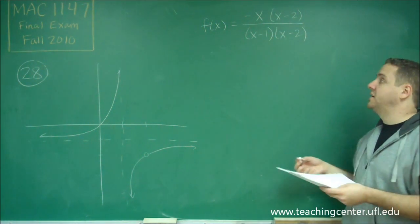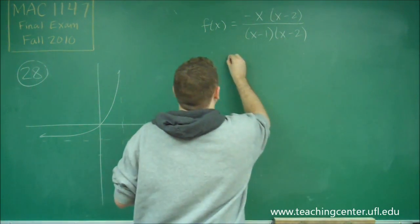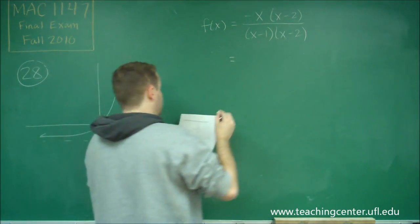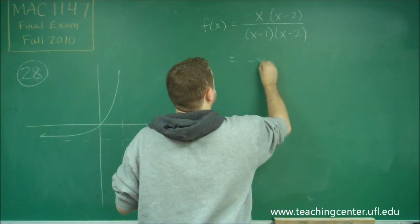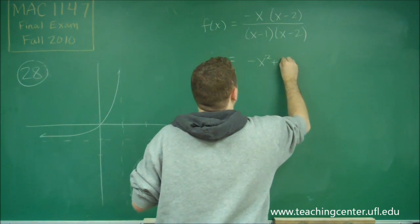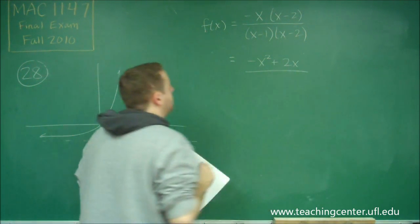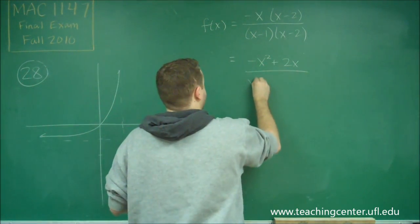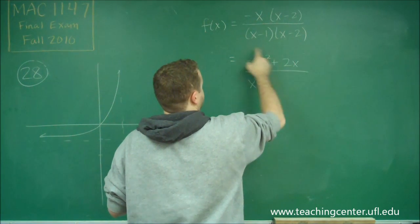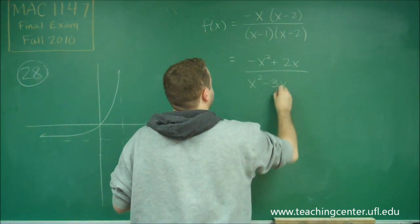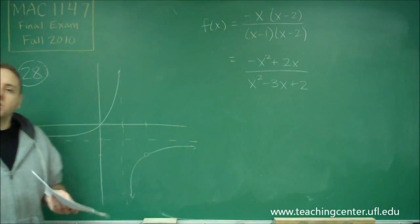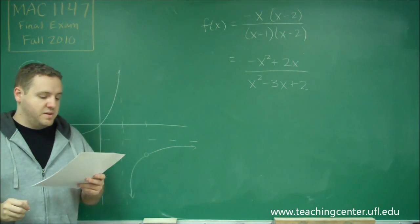So we've taken into account everything. So let's just expand this out and see which answer it matches. So this would be negative x squared plus 2x. And on the bottom, we would have x squared minus x minus 2x. We get minus 3x plus 2. So our answer needs to look like that, and that there is answer choice E.